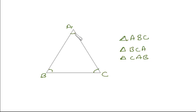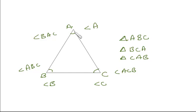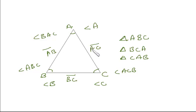This is angle A, this is angle B, and this is angle C. We write them as angle A, angle B, and angle C. To represent angle A fully, we write it as angle BAC. Similarly, this is angle ABC and this is angle ACB. There are three line segments forming this triangle: line segment AB, line segment BC, and line segment AC — these are the three sides of the triangle. So we have discussed the vertices, sides, and angles of the triangle.